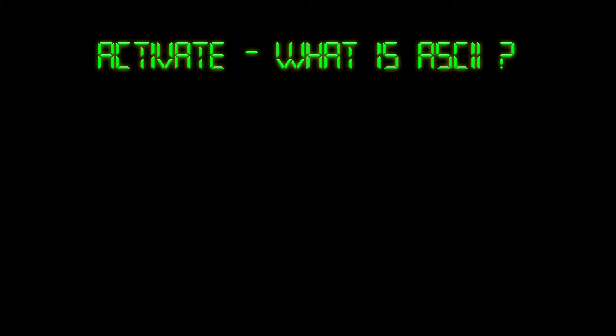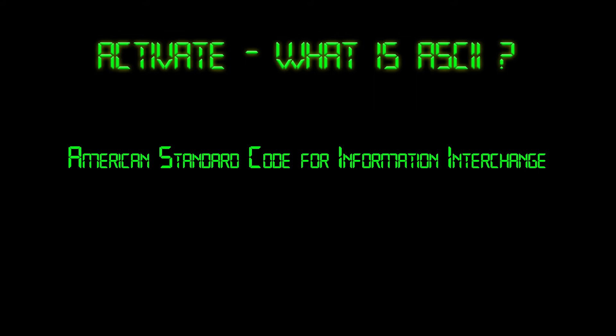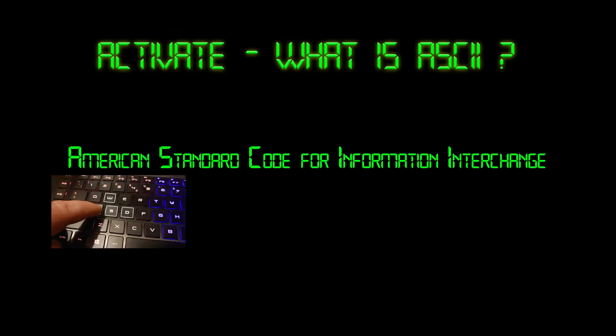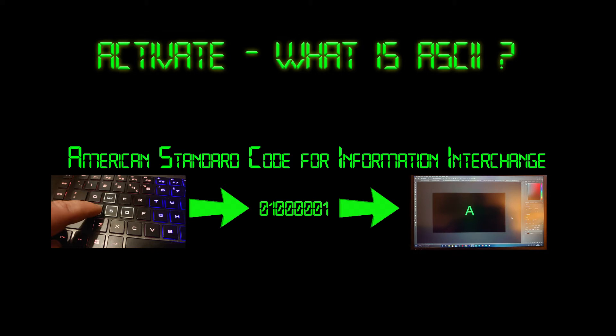The next task is the activate task and we're going to ask: what is ASCII? The computer uses ASCII to tell what key we're pressing on the keyboard. ASCII stands for American Standard Code for Information Interchange, and when you type a key it sends a binary code to the computer. The computer then uses the character set as a translation guide to determine which characters to print on the screen.